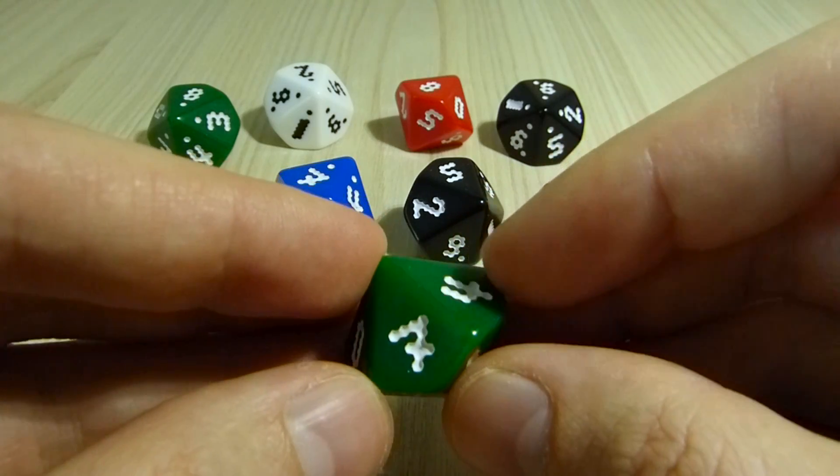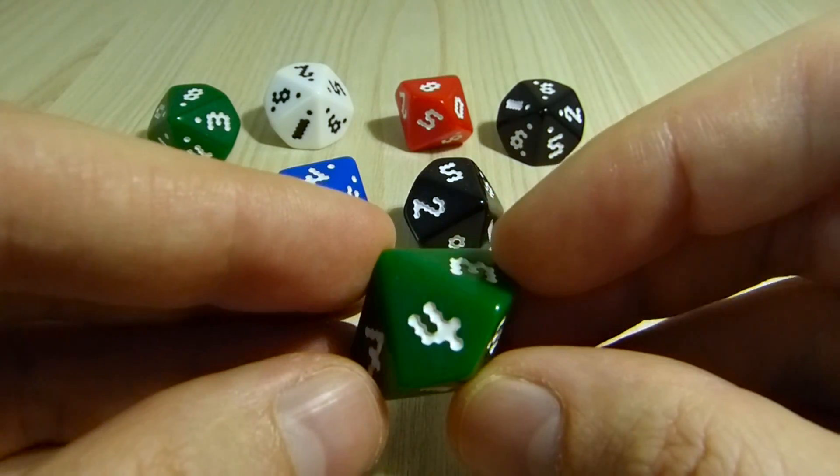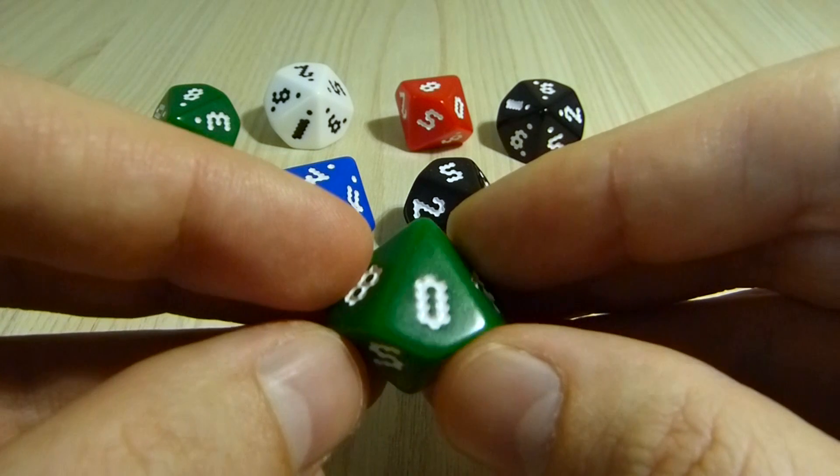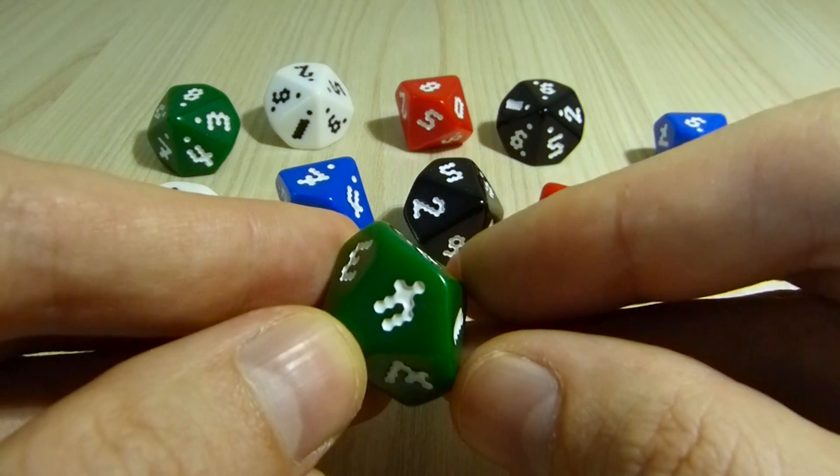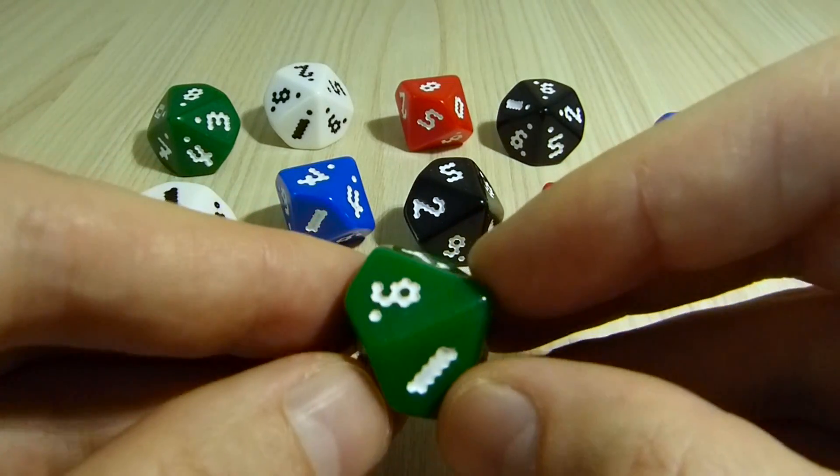The first thing you might notice with these is the numbering is unusual, or the shapes of the numerals. Each number is made from 10 hexagons, the same size hexagons on each of the numbers on the die, which means that the same amount of material is removed from each face of the die.